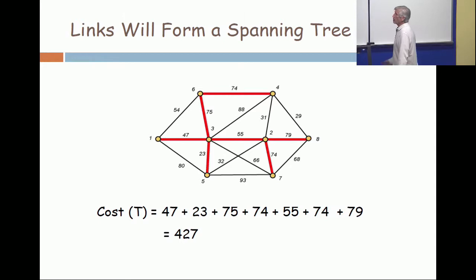Here's a particular solution. You come in to the CEO and say, build those links, and everybody will be able to talk to everybody, and the cost in millions of dollars is $427 million. That's a big project. You better be right in your selection of edges.